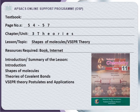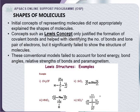Students, we are going to start the third chapter, which is related to the theories of covalent bonding and shapes of molecules. In today's lecture we will learn what is meant by the shapes of molecules, how important they are, and which theories are responsible for the explanation of covalent bonding within the molecules. The first theory discussed is called VSEPR theory; its postulates and applications will be discussed.